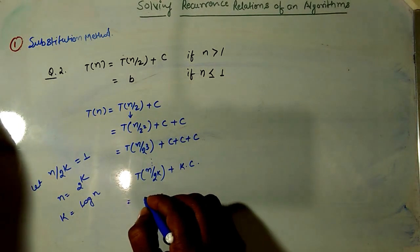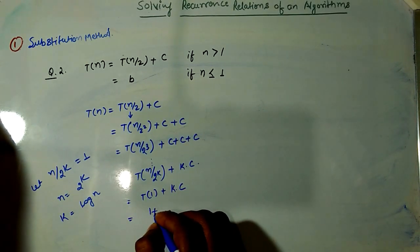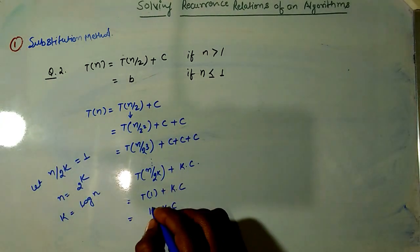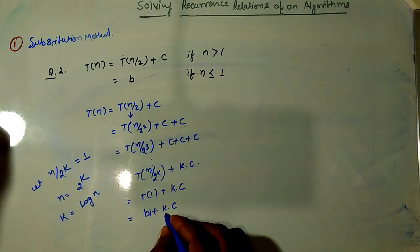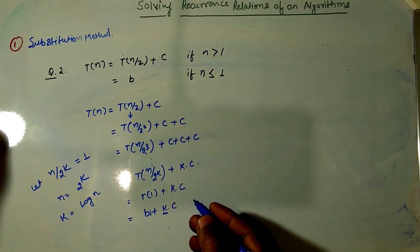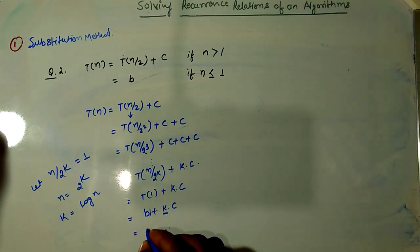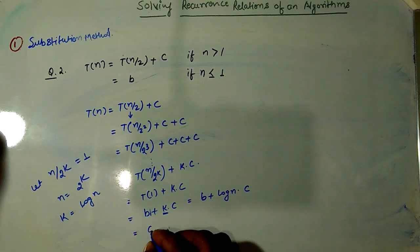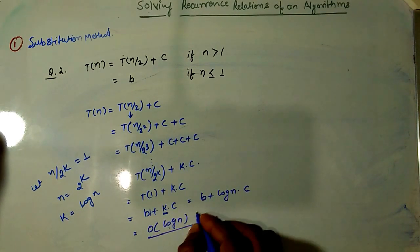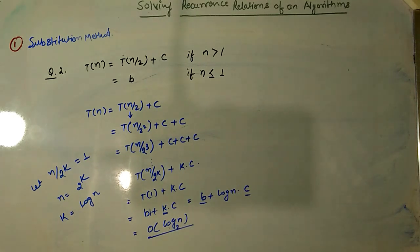Substituting back, T(1) + k·c = b + k·c. Replacing k with log n gives b + c·log n, and since we ignore constants, the time complexity of this relation is O(log n) base 2.